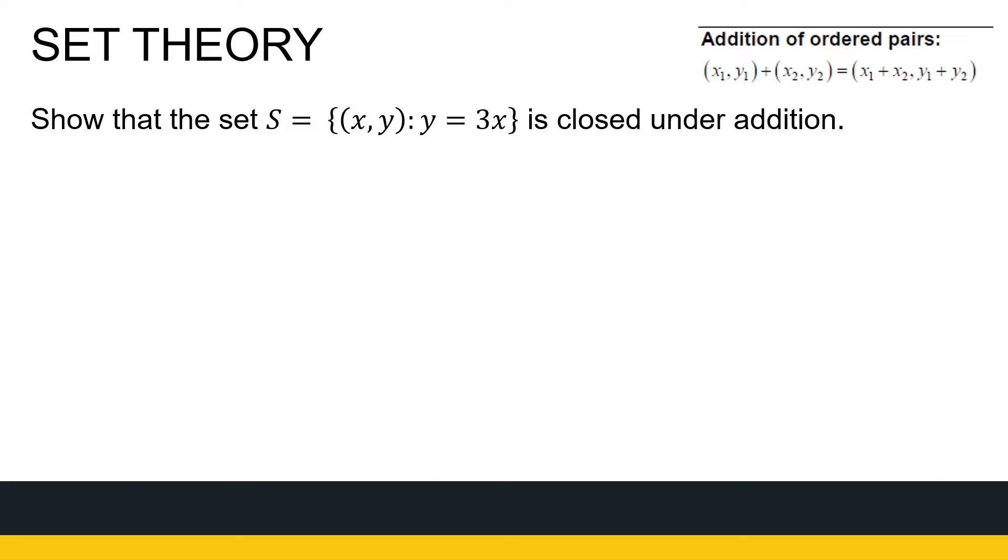So let's take a look. So I've got a set S here, ordered pairs (x, y) where y is equal to 3 times x. We want to show it's closed under addition. At the top right I just have a reminder of the definition of how we add ordered pairs. So let's just get a feel for the set S again. What do the elements look like? Well, y is 3 times x. So if x is 1, y is 3. If x is 0, y is 0. If x is 2, y is 6. If x is minus 2, y is minus 6.